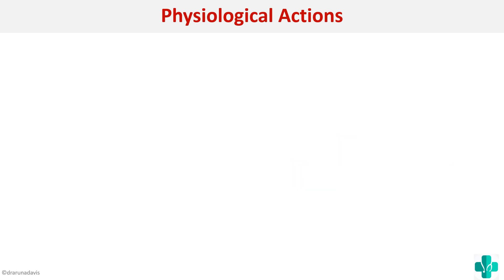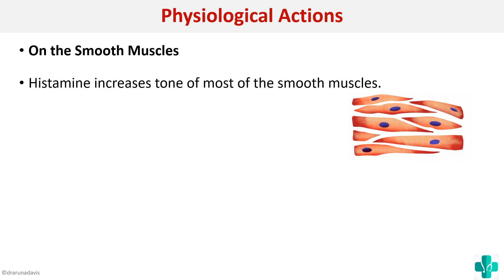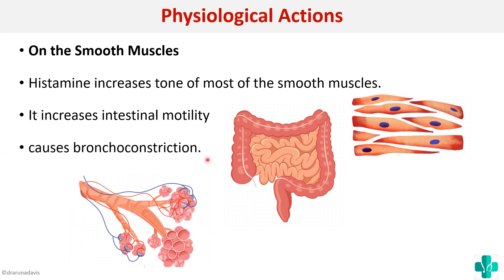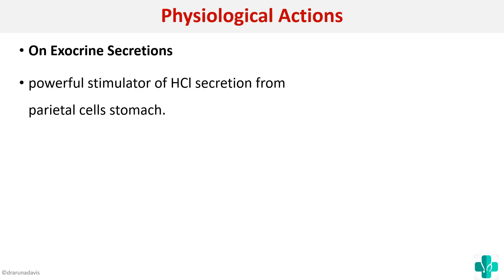Next, the action on smooth muscle: histamine increases the tone of most smooth muscles, which is why it can increase intestinal motility. In the lungs, it causes bronchoconstriction, which makes breathing difficult. So it increases smooth muscle tone, increases intestinal motility, and causes bronchoconstriction.